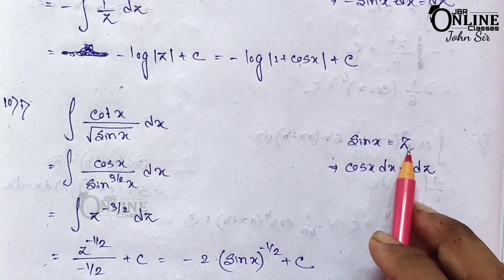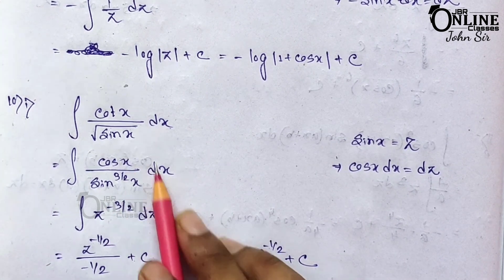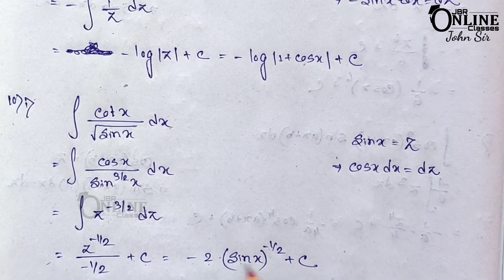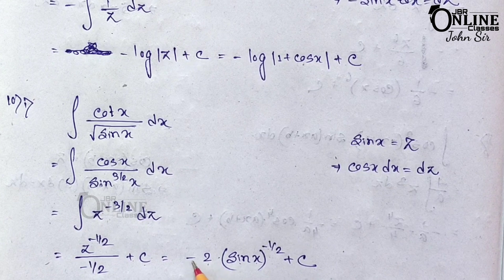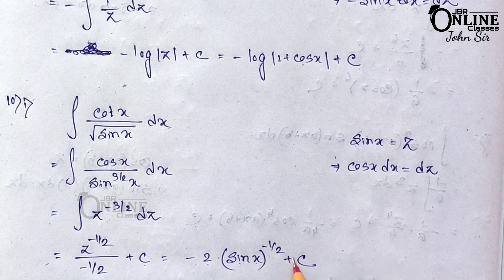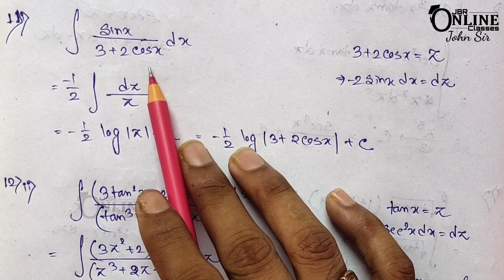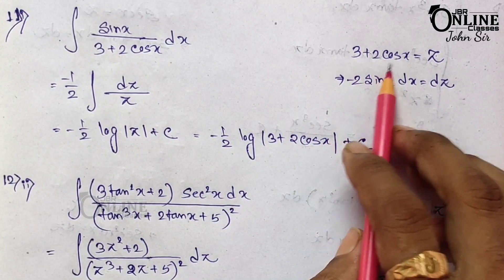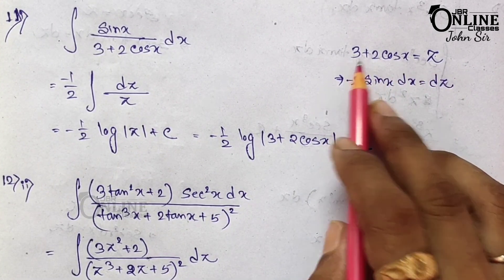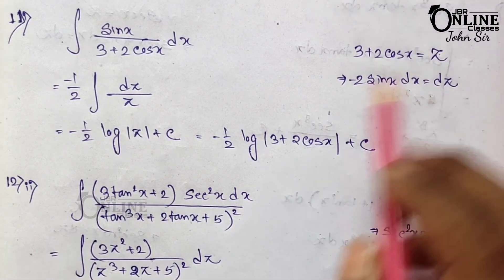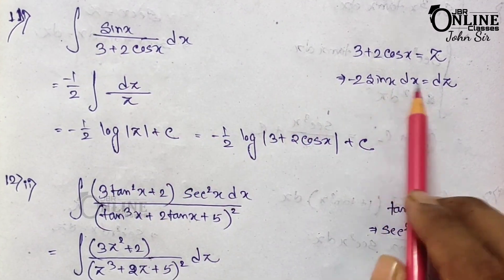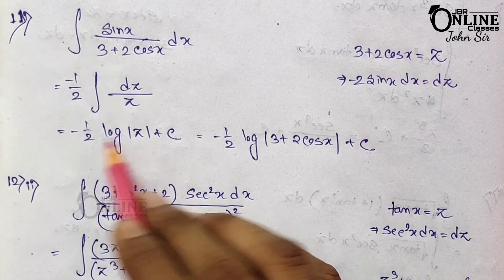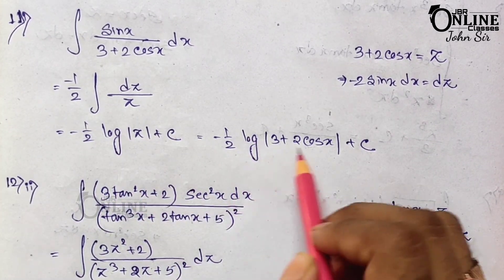Continuing problem 10.1: ∫z^(−3/2) dz = z^(−1/2)/(−1/2) + C = −2 sin^(−1/2)x + C = −2/√sin x + C. Problem 11.1: ∫sin x / (3 + 2cos x) dx. Let 3 + 2cos x = z. The derivative gives −2 sin x dx = dz, so sin x dx = −dz/2. The integral becomes −(1/2)∫dz/z = −(1/2)log z + C.